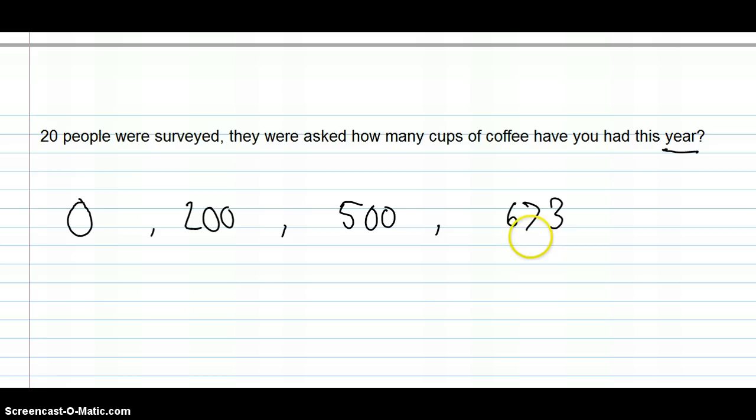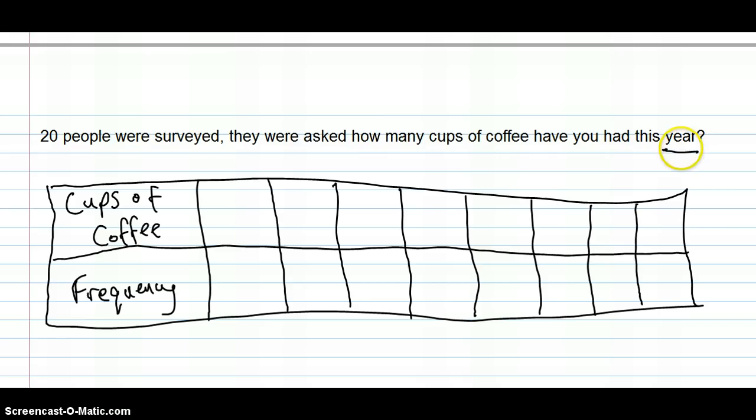Okay, so this time we've got a wide possible variety of answers, anywhere from zero all the way up to 673 and even beyond. So, you can imagine the problem we're going to have when we try and put this data into a frequency distribution table. We have to put in all the people who had zero cups of coffee, and also all the people who had one, two, three, four, five, six, seven, and we want to keep going and put in all the different possible scores. We want to put in the person who had 500 cups of coffee, and the person who had 673 cups of coffee. But, it's not realistic, it's not practical to put all of those into this table, is it?